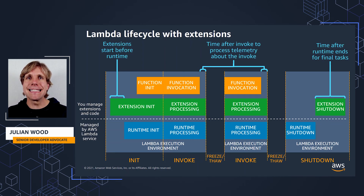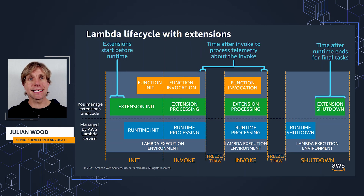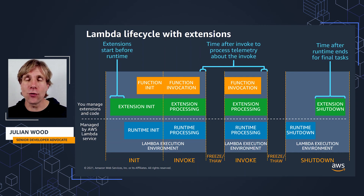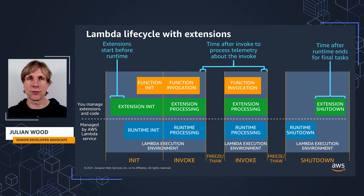So you can see Lambda is exposing more of the function lifecycle with three distinct phases — init, invoke, and shutdown — which extensions can tap into to allow your tools more visibility and control of the Lambda lifecycle. I go into even more detail in the video on building Lambda Extensions using the Extensions API, where I'll show the individual API calls.